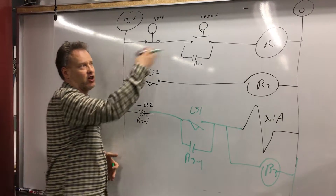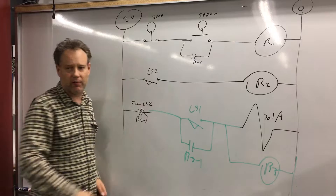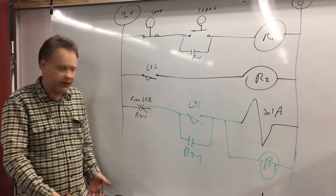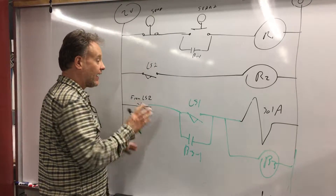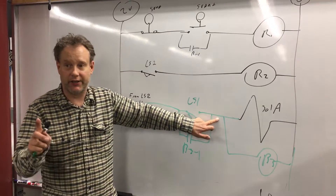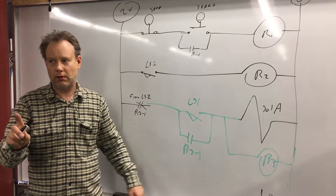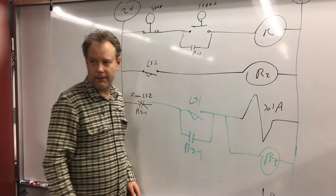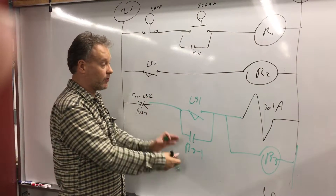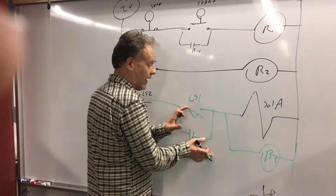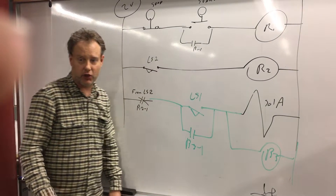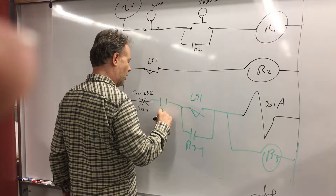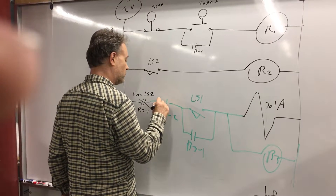So how do I add the logic of the start button in here somewhere? I can either put it there or there. We don't put anything in between our holding circuit and the actual relay itself. In this case I'm going to put it right here — R1-2.